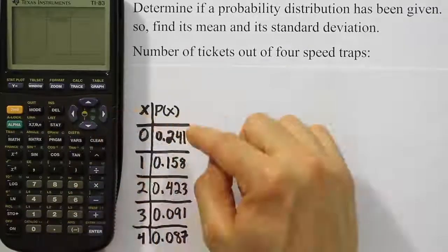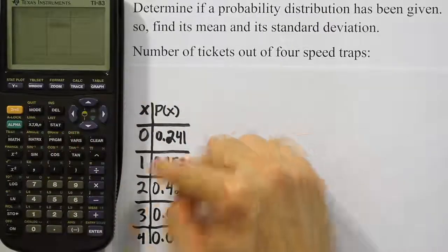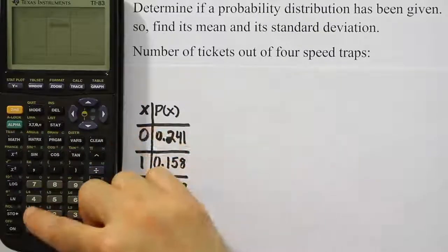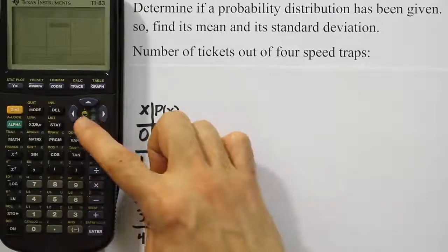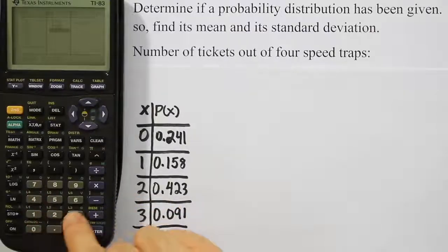Then I arrow over and I'm going to type in 0.241, then 0.158. Notice I can push the down arrow or I can hit enter. Either one will do it. 0.423, enter.